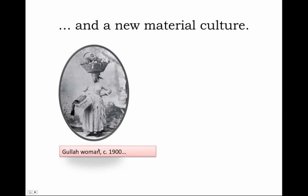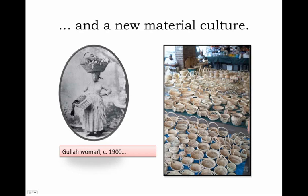Here you see a Gullah woman around the turn of the 20th century posing for the photographer's camera with baskets — baskets woven from materials at hand in the African tradition, what comes to be known as the sweet grass basket of Carolina, which even today is sold to tourists representing the extraordinary techniques of weaving and basket making inherited from Africa that became part of the New World Creole culture of the Western Hemisphere.